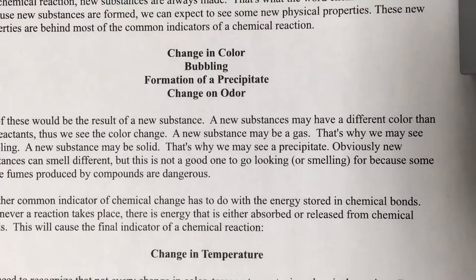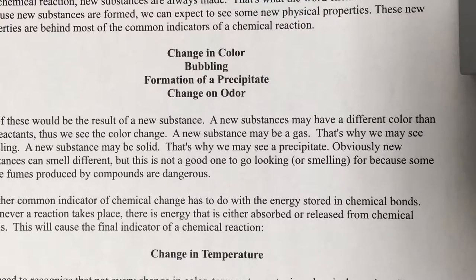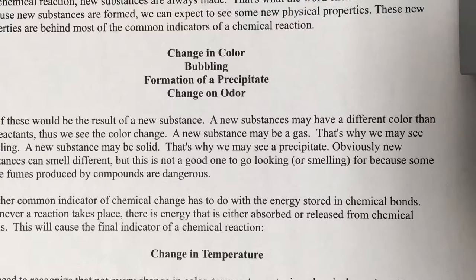The formation of a precipitate is another indicator. You mix two liquid things together and you get a solid — and again, we're talking spontaneous here. We're not saying I put it in the freezer and made a solid. I just mixed two aqueous things together and it became solid on its own. What you're seeing there is the state of a new substance, called a precipitate.